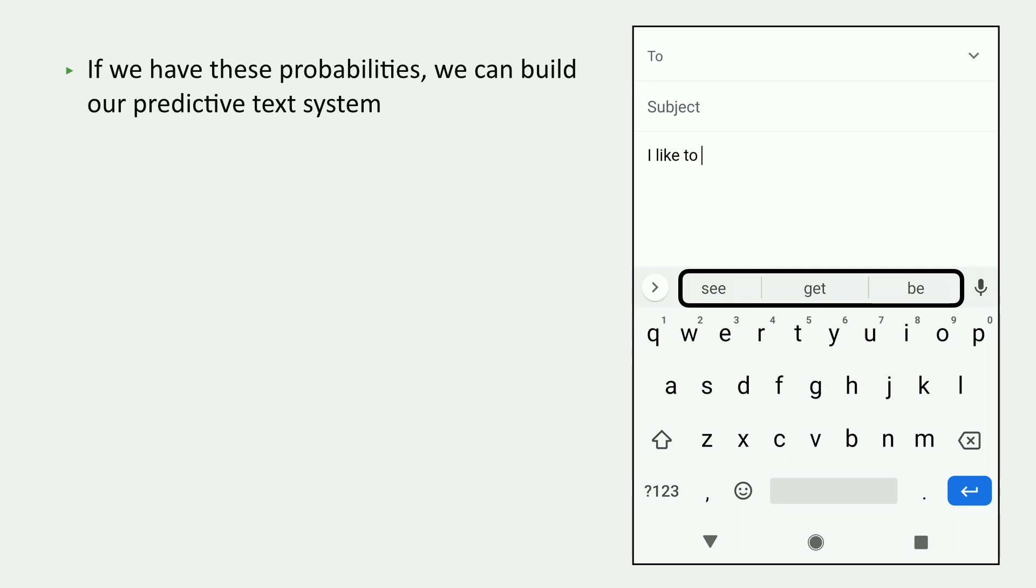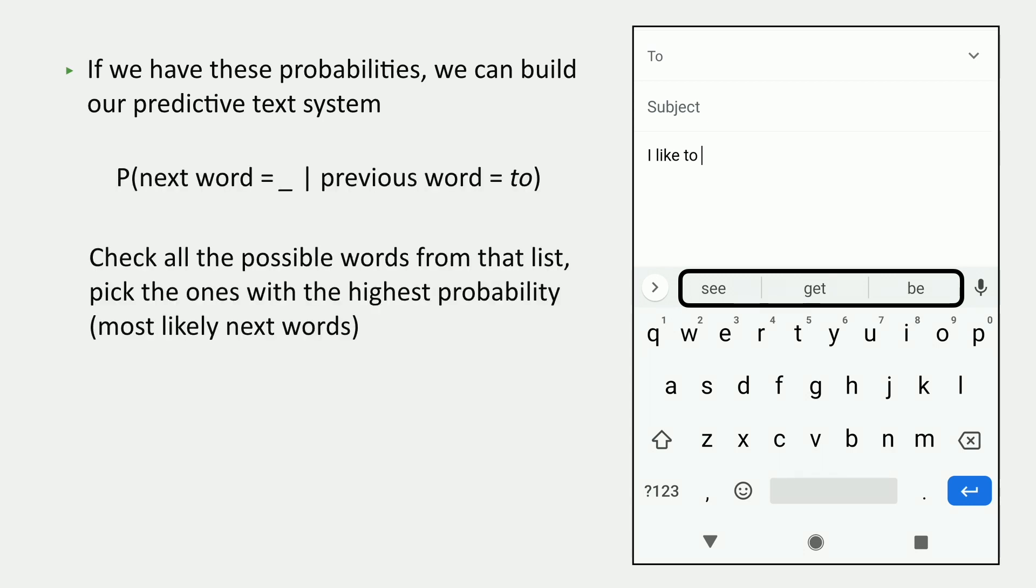These probabilities are actually enough to give us a predictive text system. Because if I'm in this situation on my phone where I've typed the word to, then essentially what we want to do is we want to look at the probability that the next word equals whatever, given that the previous word equals to. And the way we might implement this is we check all the words from our word list or our vocabulary, and we pick the ones with the highest probability to show on the screen here, C, get, and B.